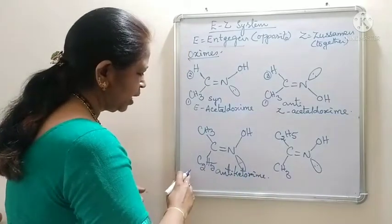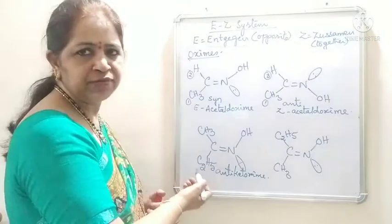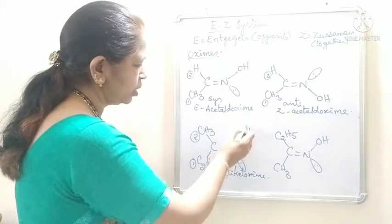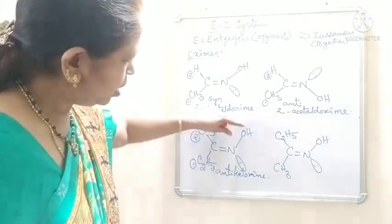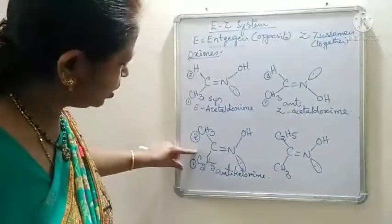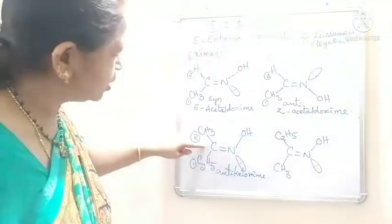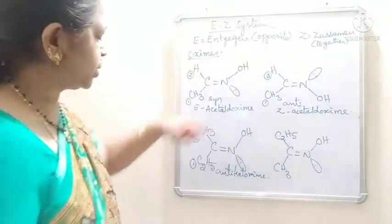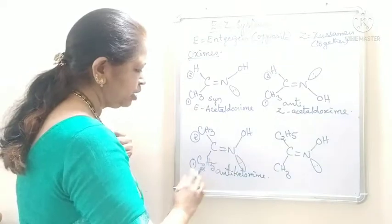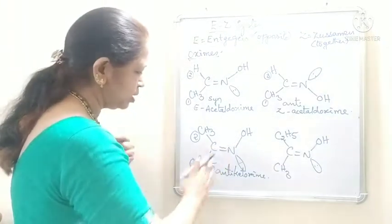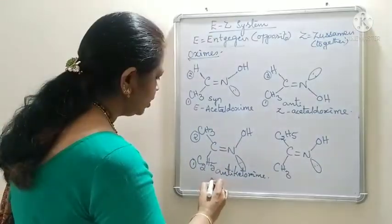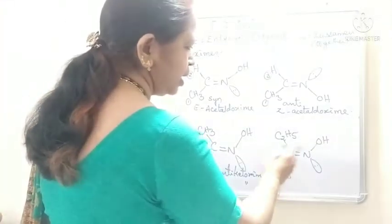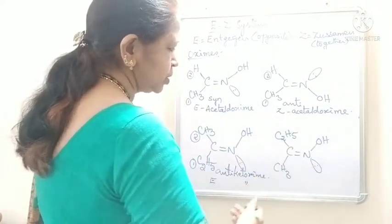Now we have to give the priorities to methyl and ethyl groups. Ethyl group gets the first priority. This hydroxyl group and first priority group are lying on the opposite side of the double bond. So, what is the configuration — E or Z? It is E configuration. We have to check the hydroxyl group and first priority groups — they are lying on the opposite side. So it is E ketoxime.